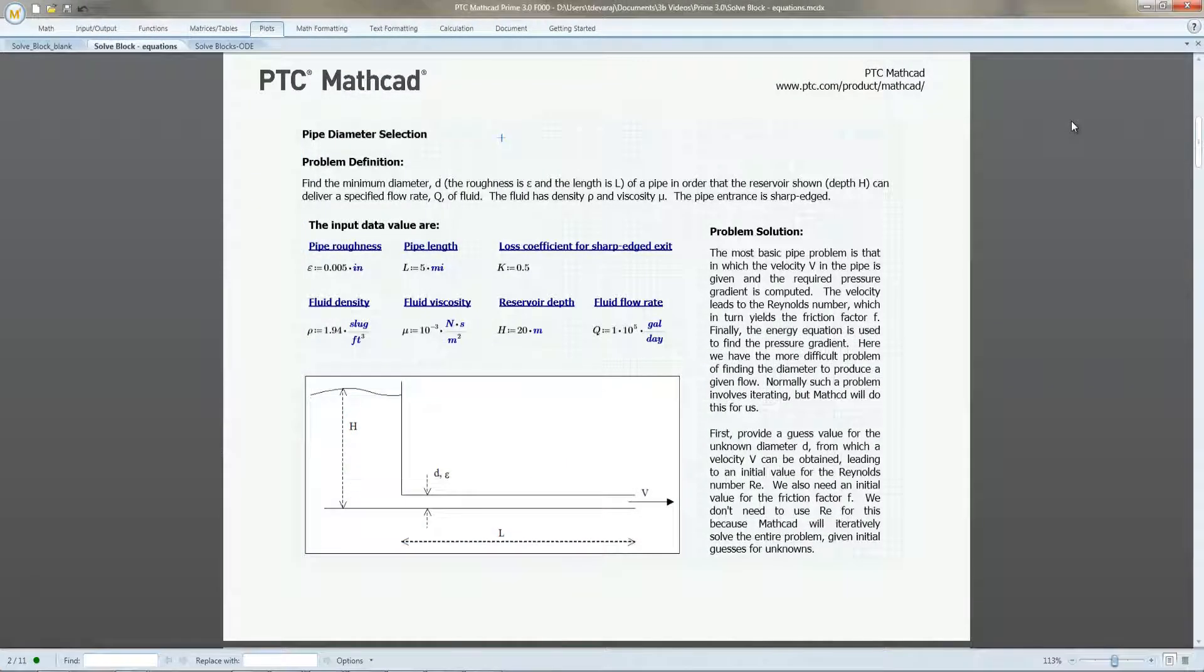Now, let's look at a real-world problem. We want to find the minimum pipe diameter in a reservoir to deliver a specified rate of flow. We need to account for pipe length and roughness, flow rate, reservoir depth, and fluid properties.